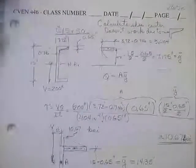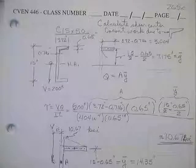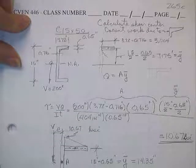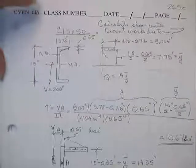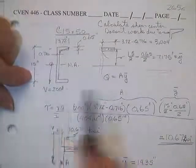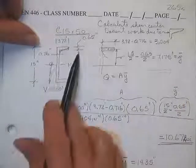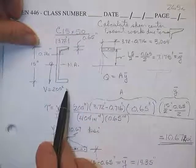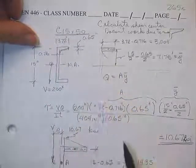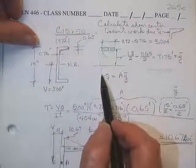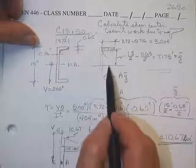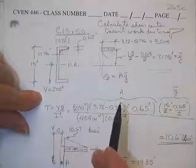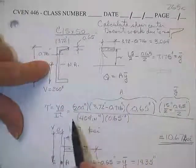Here's how they get the shear center — I picked a channel. A channel is particularly difficult to analyze this way. Assuming it's 15 inches deep, 0.65-inch web thickness, with a listed flange height, I'll break it up into rectangles, solve for shearing stresses at various points, multiply the average shear stress times the area, multiply by the moment arm, and find where to put the 200-kip load so I know where the shear center is.